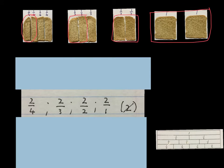Again I wrote them from smallest to biggest. Here I have two quarters — circled in red — it's the smallest. Two thirds is more. Two halves is more again. And then two halves is definitely the most.